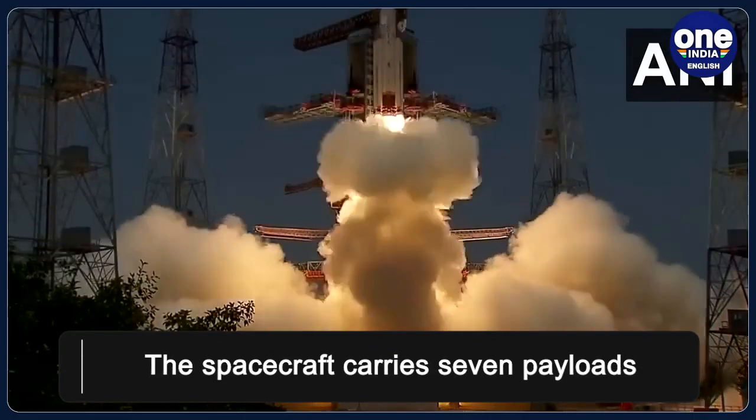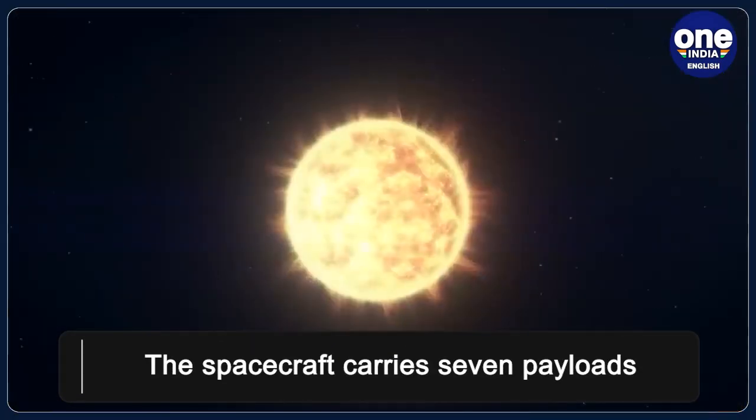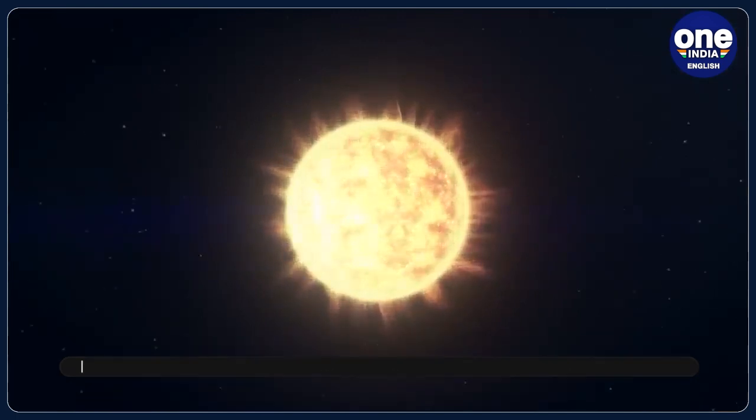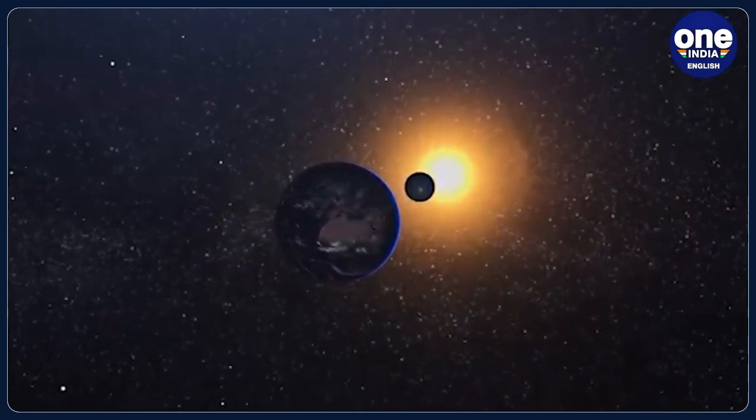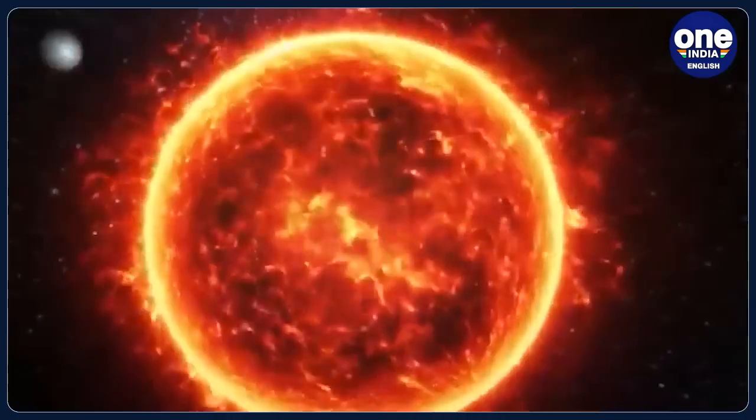The spacecraft carries seven payloads designed to observe various aspects of the Sun, including its photosphere, chromosphere, and corona. It will also measure the variation in magnetic field strength at the halo orbit around L1.